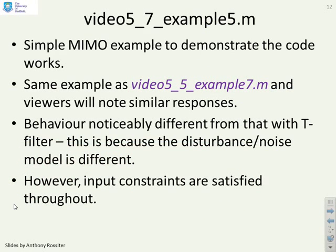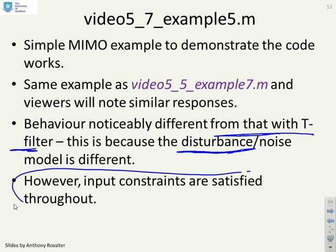Our final example, example 5, is a MIMO example to demonstrate again that the code works. And I'm not going to run that one. But again, you will notice the behaviour. It's noticeably different from that with the T-filter. And the reason is that the disturbance model is different. You'll find the noise model is fairly similar. It is different, but it's similar. But the disturbance model in particular is different. But the key thing, so you can have confidence in the code, is the input constraints are satisfied throughout. So now you've got code for many different algorithms. And you should be able to run some comparisons and see how they all compare to suit your own needs.